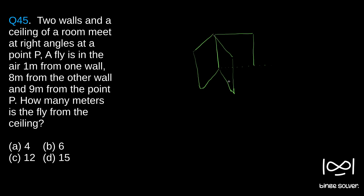The fly is one meter from one wall — let's say this is the first wall — so it is one meter from the first wall. And it is eight meters from the other wall, meaning this distance is eight meters. Sorry, it was eight meters — I made a mistake earlier saying nine.